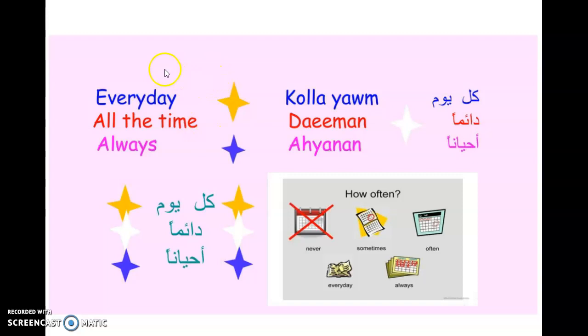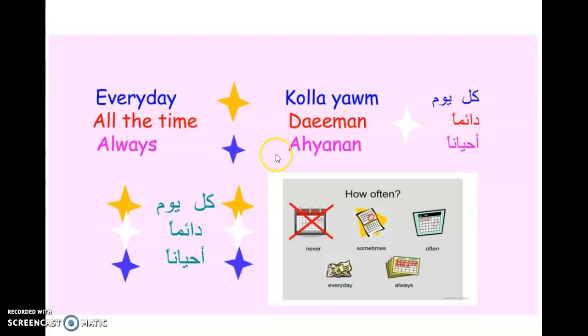We are going to learn how to say every day in Arabic, all the time, and always. Every day is kulla yaum. For example: al-abu kura-ta al-qadam kulla yaum — I play soccer every day.